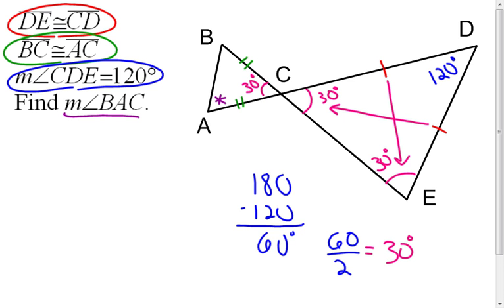And now I can use that same theorem that I did earlier that said if two sides of the triangle are congruent then the angles opposite those sides have to be congruent. That tells me that this angle, angle A and angle B have to be congruent.